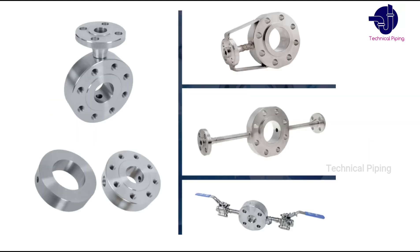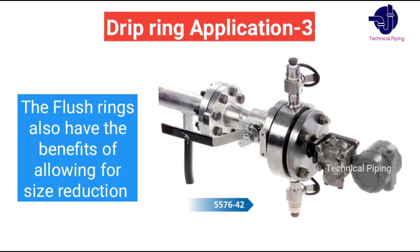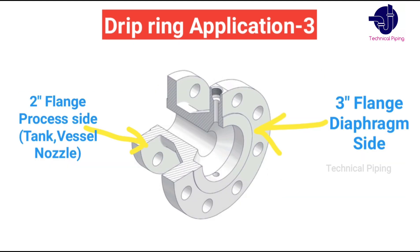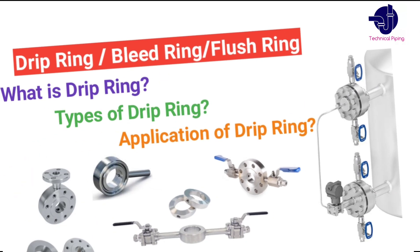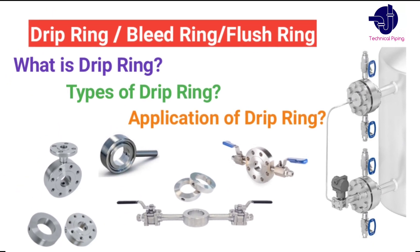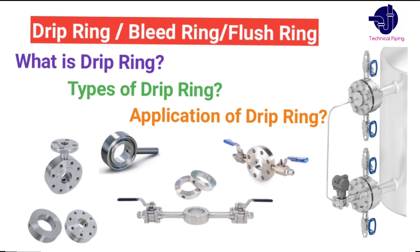Flush rings also have the benefit of allowing for size reduction — for example, a 2 inch process side flange and a 3 inch diaphragm side flange — to allow use of a larger diaphragm for improved measurement accuracy without having to employ unnecessarily large and heavy valves. I hope this video is useful for you. Thanks for watching, and don't forget to subscribe to Technical Piping YouTube channel.